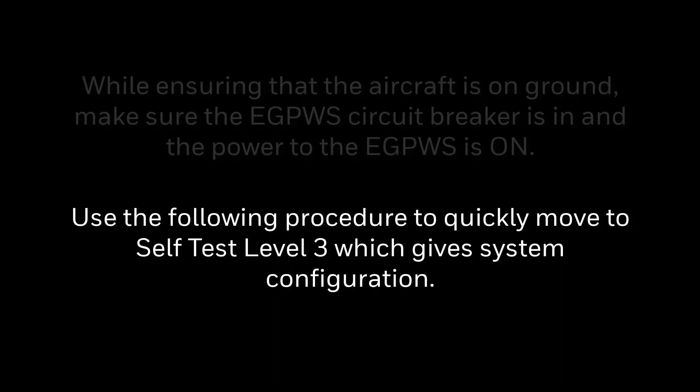While ensuring that the aircraft is on ground, make sure the EGPWS circuit breaker is in and power to the EGPWS is on. Follow the below procedure to quickly move to self-test level 3, which gives the system configuration.